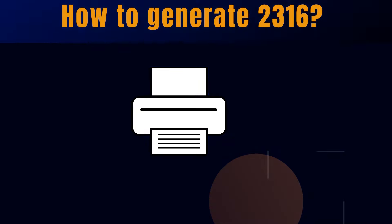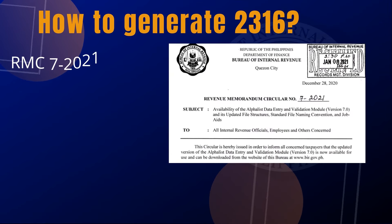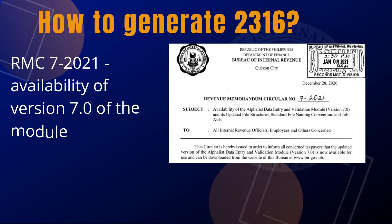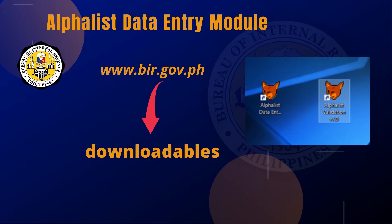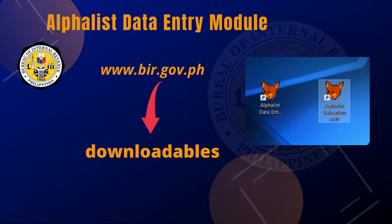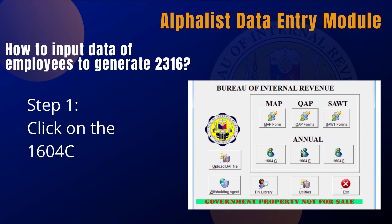How do we generate the 2316? Use the Alphalist Data Entry Module. RMC 7-2021 announces the availability of the Alphalist Data Entry and Validation Module version 7.0. To download the module, visit www.bir.gov.ph and click on the Downloadables tab. Then install the program in your computer. After downloading, you can now use the module to encode details of each employee to generate the 2316. After logging in the module, do the following: Step 1, click on the 1604-C tab.